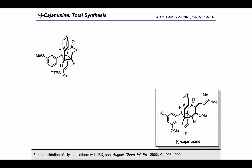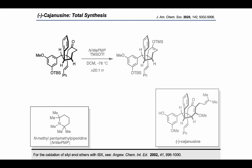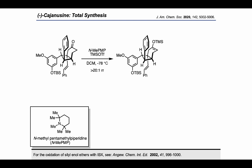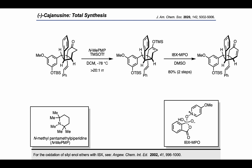Now, if we look at where we are versus where we want to be on the final target, we see that we still need to elaborate the right-hand side of the molecule. To do this, the authors carried out a regioselective silyl enol ether formation, followed by an oxidation with IBX-MPO, which allowed the formation of the enone.